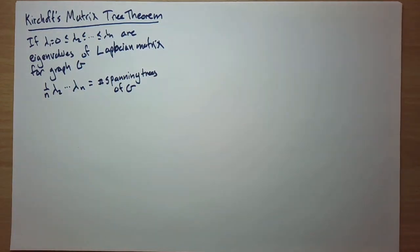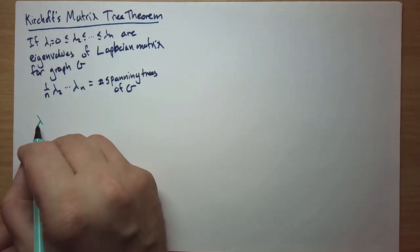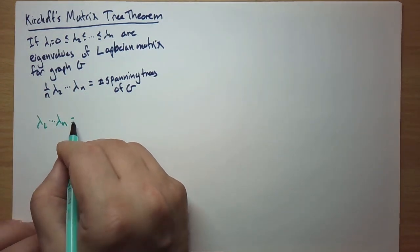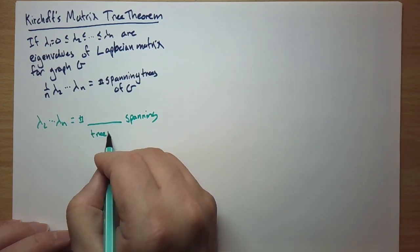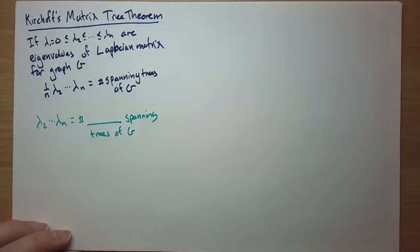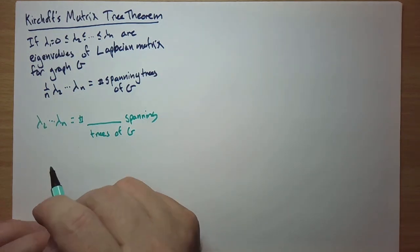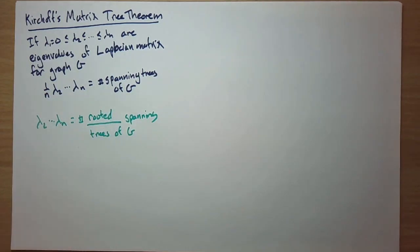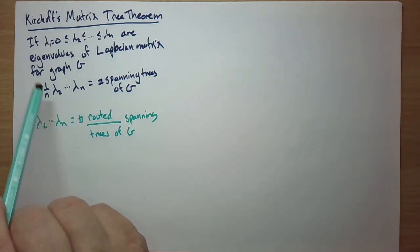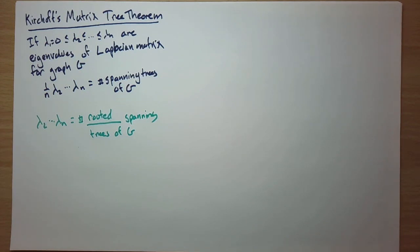This is sometimes stated in a slightly different way: lambda_2 · ... · lambda_n equals the number of rooted spanning trees of G. The factor of 1/n removes the root, because if you have an n-vertex labeled tree, the root can be any one of the n vertices.